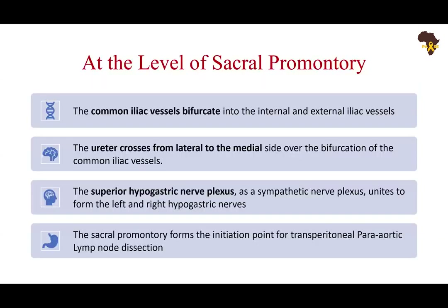At the sacral promontory level, important things to note: the common iliac vessels bifurcate into the internal and external. The ureter crosses over from the lateral to the medial side into the pelvis, over the bifurcation — at different levels on the left and right. We have the superior hypogastric nerve plexus, a sympathetic plexus, which forms the left and right inferior hypogastric nerves that go down the sidewall of the pelvis, medial to the ureter. The sacral promontory also forms the initiation point for presacral neurectomy.